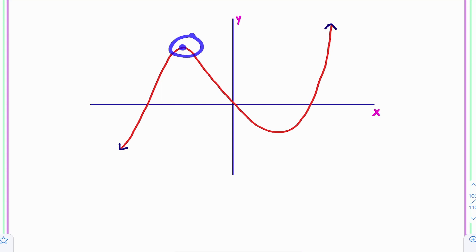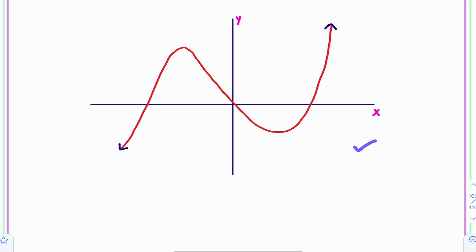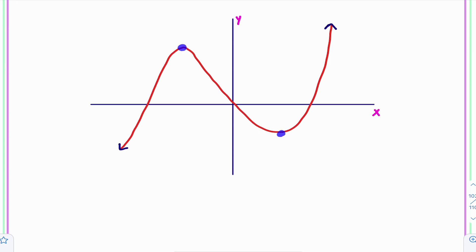In that case, we don't discuss local maxima or local minima separately. We will say that this function attains maximum value at this point and minimum value at this point. In this graph, local minima is the absolute minima and local maxima is the absolute maxima. So we say that this function attains maximum value and minimum value — we do not specifically say local maxima or local minima of this function.